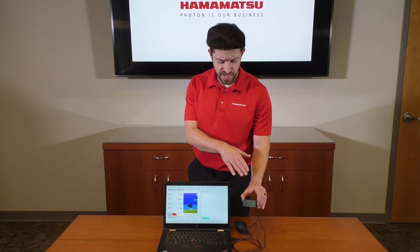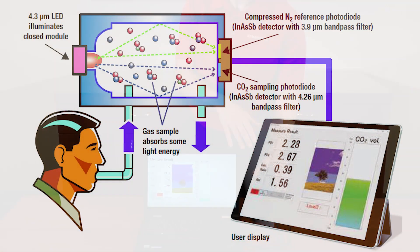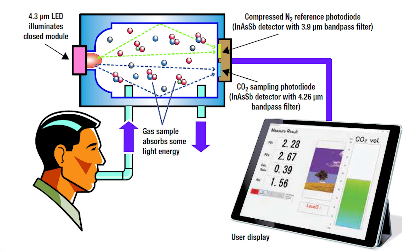So what's going on inside this little gas detection module? Well, first there's a 4.3 micron LED. Why 4.3 micron? That is a very strong absorption band for carbon dioxide. And then we have a couple of NASB diodes, each with a bandpass filter. The first bandpass filter is centered at 4.3 — that is the measurement channel. The other diode is the reference channel, centered at 3.9.